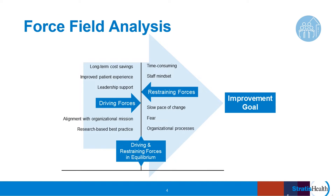Another model we can credit to Kurt Lewin is the force field analysis, which enables you to identify the factors or forces that are either driving or restraining change. In this graphic, the line in the center represents our current state, and the big blue arrow in the background is the direction we want to move to achieve our improvement goal on the right. In the middle, we have our driving and restraining forces — those factors helping to push or hinder the change needed to achieve our goal. The factors on the chart are examples and not listed in any particular order.